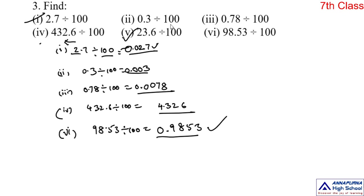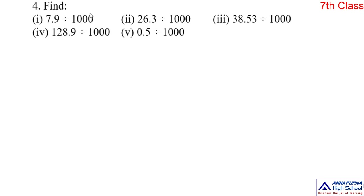Now come to the next Roman numeral — the fourth one. Find 7.9 divided by 1000. The rule is the same. To divide a decimal number by 1000, shift the digits in the decimal number to the left. How many places? Three places. Because in 1000, three zeros are there. You should shift this decimal number towards left three places.